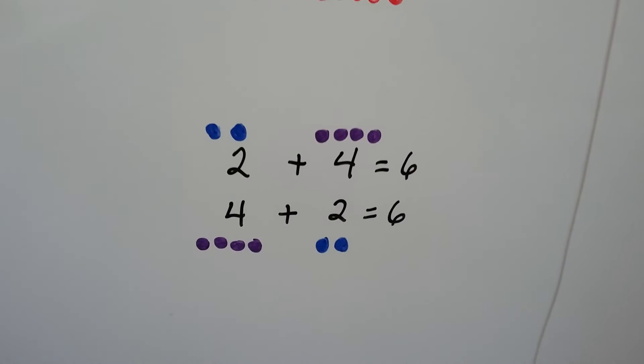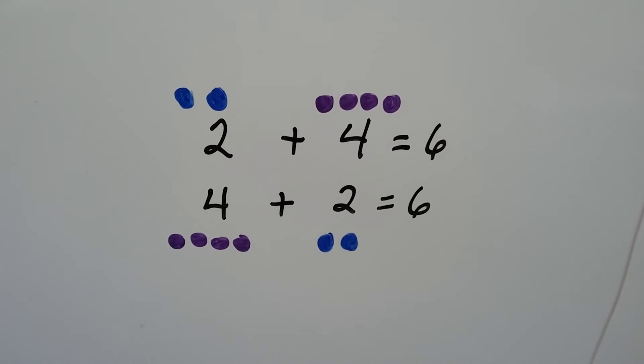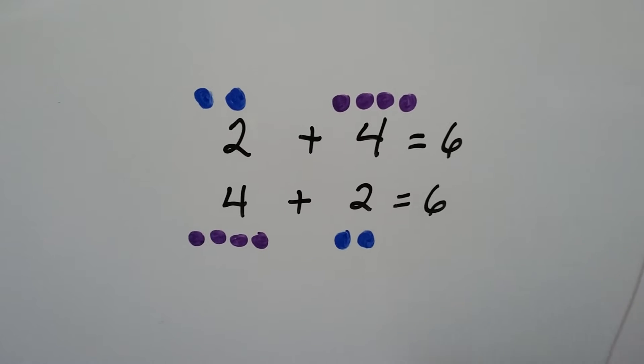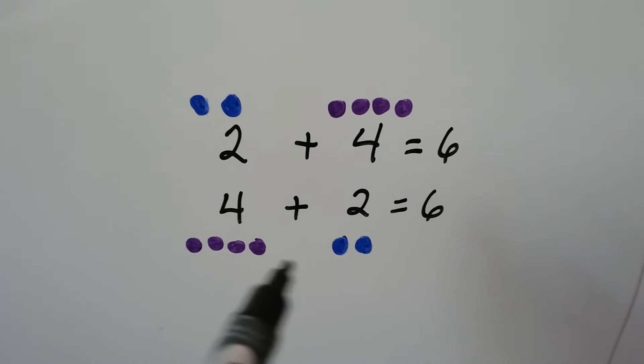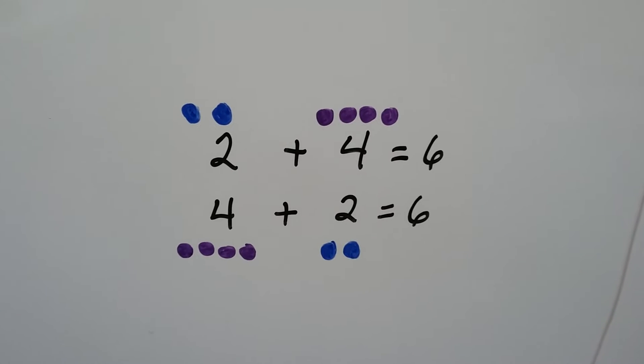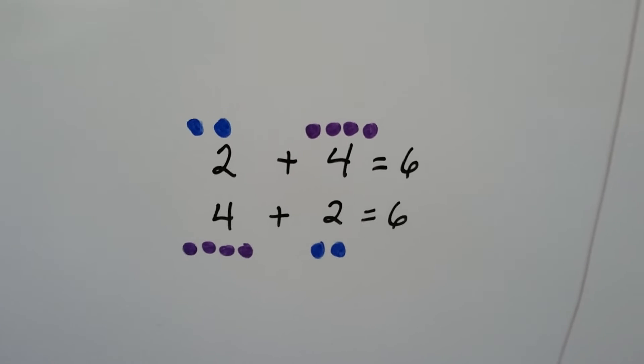Here we have two plus four equals six, and four plus two equals six — four, five, six. Either way, it equals six.